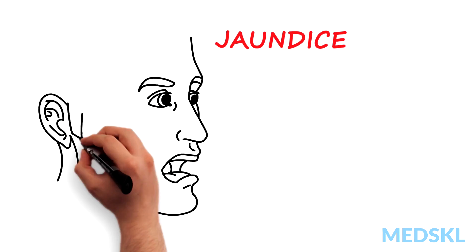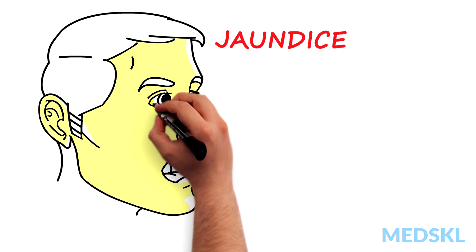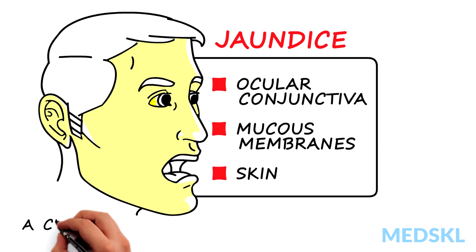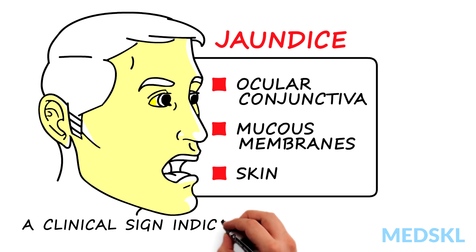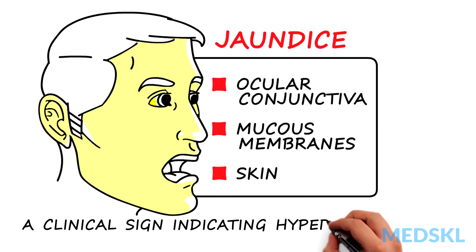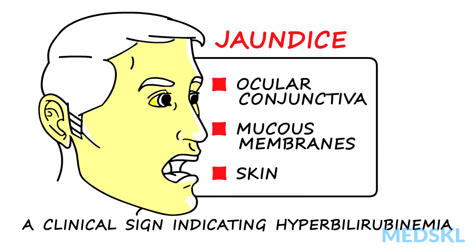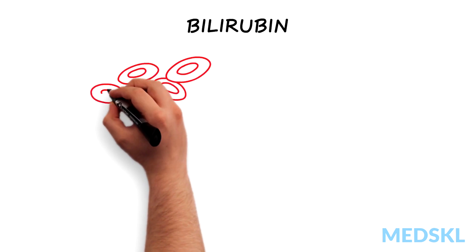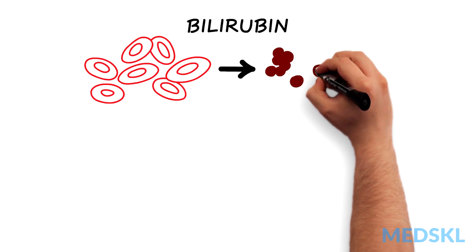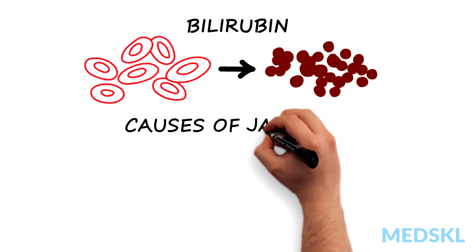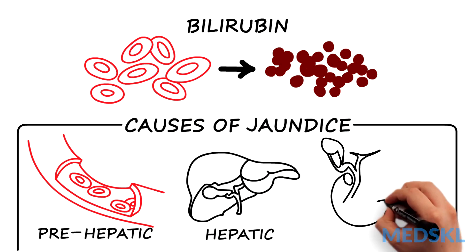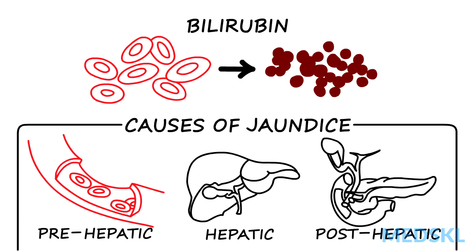Jaundice is the yellow discoloration of the ocular conjunctiva, mucous membranes and skin. Jaundice is a clinical sign indicating hyperbilirubinemia and the terms are often used interchangeably. Bilirubin is a normal breakdown product of hemoglobin, and jaundice can be thought of as pre-hepatic, hepatic and post-hepatic causes.